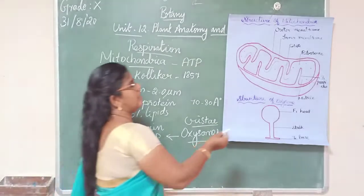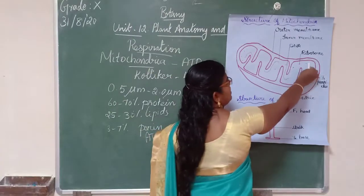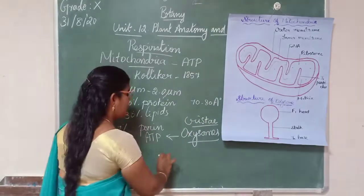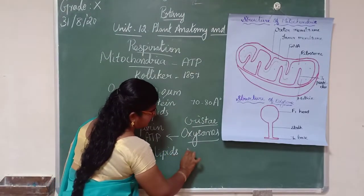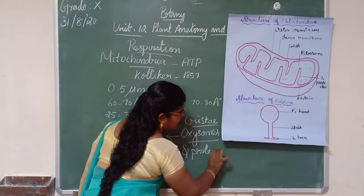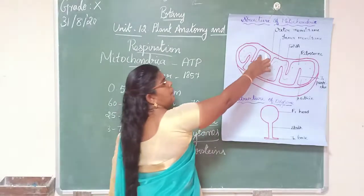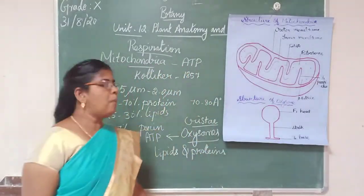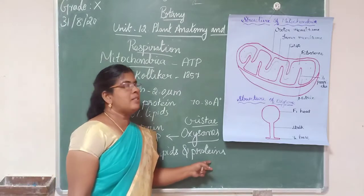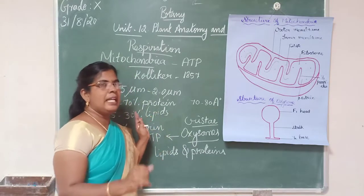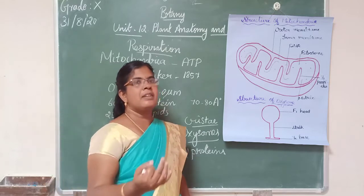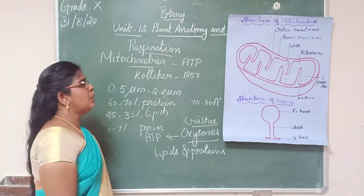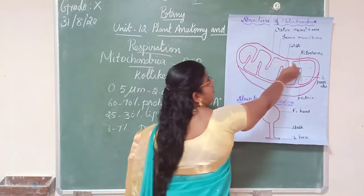The mitochondrial matrix is found inner to the membrane. It is a complex mixture of lipids and proteins. The matrix also contains enzymes, tRNA, mitochondrial DNA, and other components required for cellular respiration.